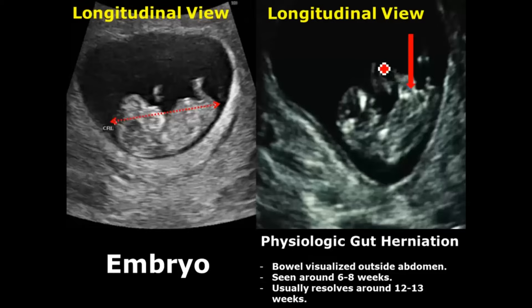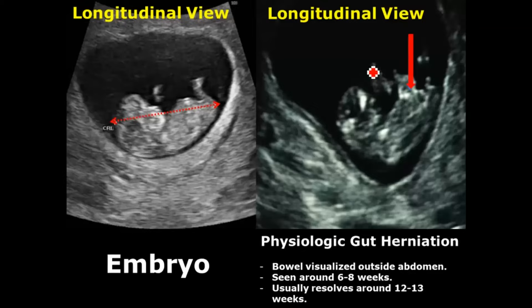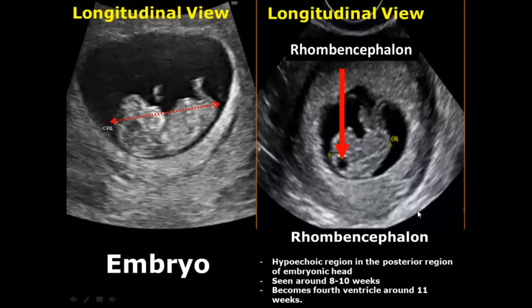Physiologic gut herniation is a normal occurrence in the first trimester. Around 6 to 8 weeks, there is bulging of the intestines of the embryo because the bowel is growing much faster than the abdominal cavity. By 12 to 13 weeks it will return to its normal appearance. Another normal occurrence is the rhombencephalon, seen around 8 to 10 weeks as a hypoechoic region in the posterior part of the embryonic head, becoming the fourth ventricle by 11 weeks.